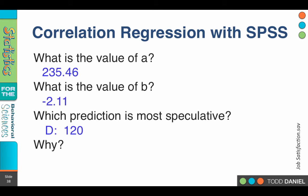Why was it so speculative? Why was it not good? Because we were predicting outside of the range.